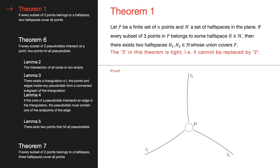I will now prove that 3 in this theorem is tight — that is, if every subset of two points belongs to some half-space, there may not exist two half-spaces covering all points in P. To construct our set of points, we take a disk D and three arcs, each with a very large radius of curvature, so any tangent to an arc will pass through disk D but not intersect any other arc.